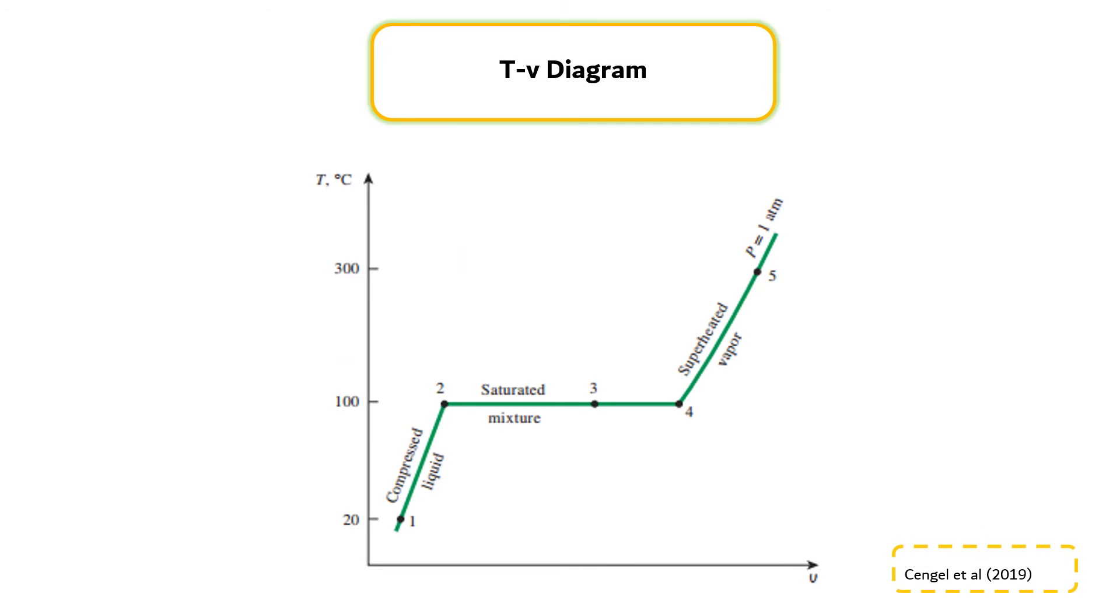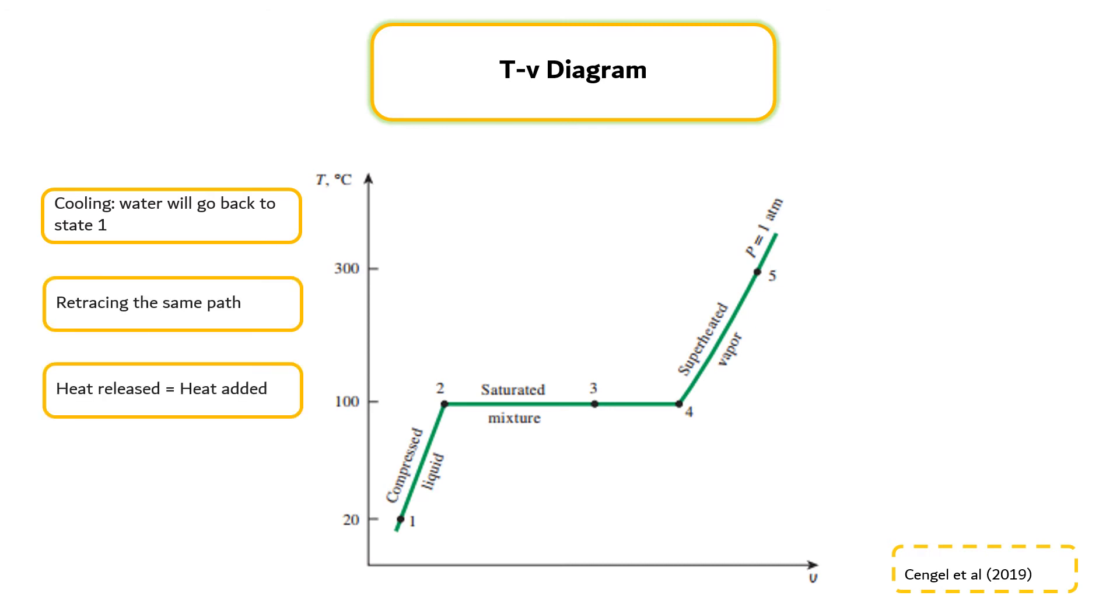This constant pressure phase change process is illustrated on a T-v diagram as shown in the figure. If the entire process described here is reversed by cooling the water while maintaining the pressure at the same value, the water will go back to state 1, retracing the same path, and in so doing, the amount of heat released will exactly match the amount of heat added during the heating process.